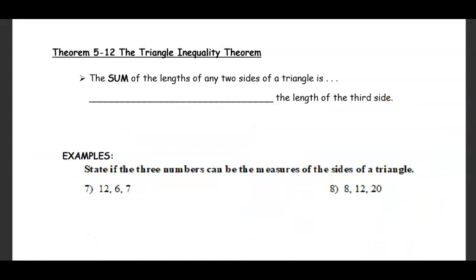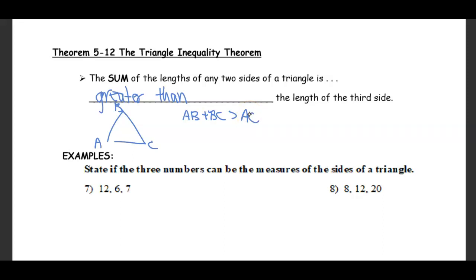That brings us to the triangle inequality theorem, which says the sum of the lengths of any two sides of a triangle is greater than the length of the third side. For triangle ABC: AB plus BC must be greater than AC; BC plus AC must be greater than AB; and AC plus AB must be greater than BC.